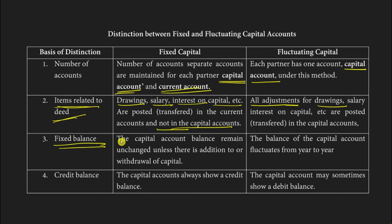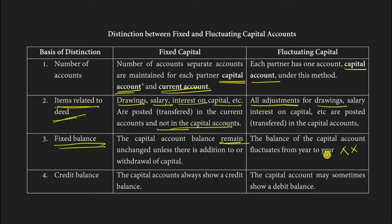The next differentiation is about the fixed balance. In the fixed capital method, the capital account balance remains unchanged because all deed-related items go into the current account. In the fluctuating method, as the name suggests, the balance fluctuates — because all deed-related items affect the capital account directly, causing the balance to change every year.